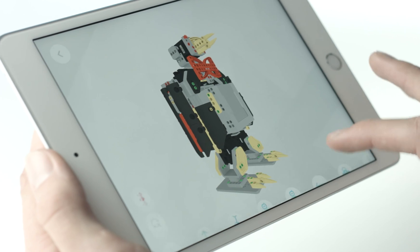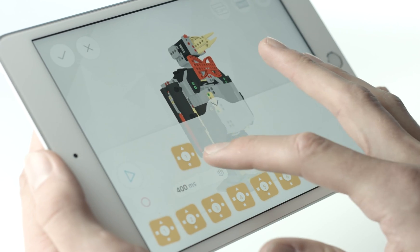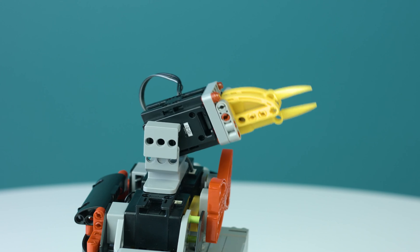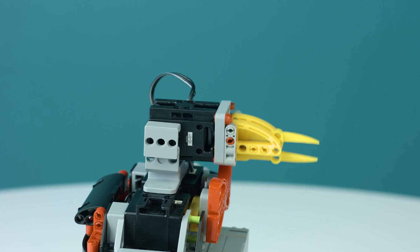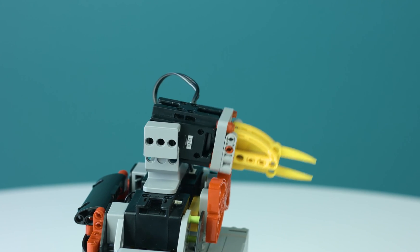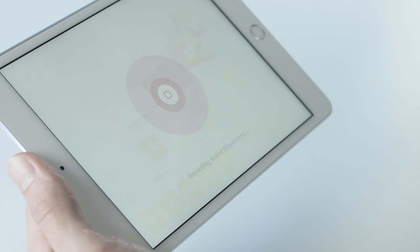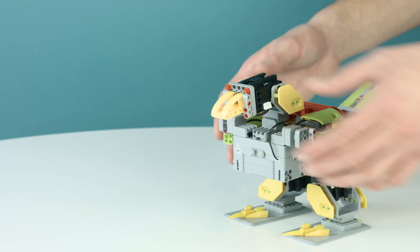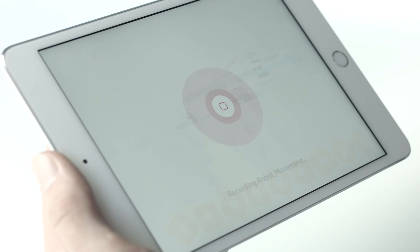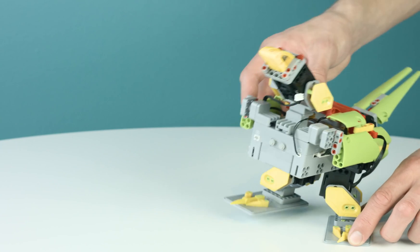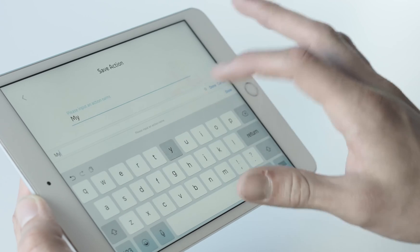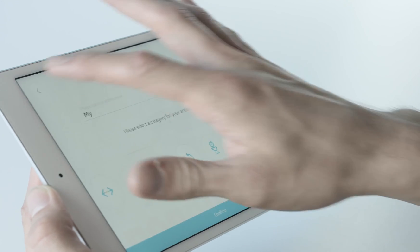To create a new action, click the plus button and enter the create action page. Here you can control each individual servo in accordance to their ID number through the app or record the motion by clicking record in the left-hand corner and moving the servo into a position. Repeat this step until you have a series of movements. Save this action and add it to your controller or series of actions.